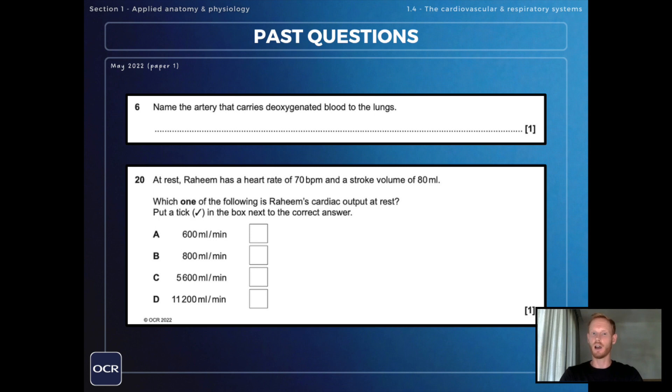So the first question is to name the artery that carries deoxygenated blood to the lungs, and that one is the pulmonary artery. In the lungs the blood becomes oxygenated and then it's carried back to the heart in the pulmonary vein. Next question from the same paper: